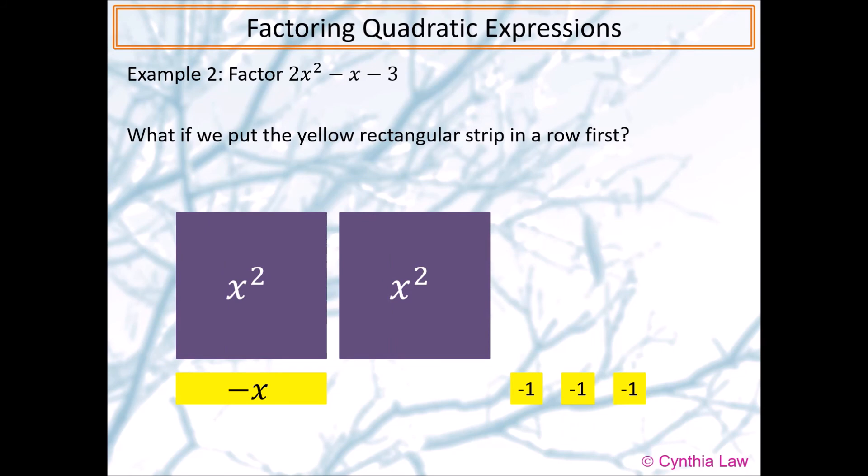Let's change how we put the yellow rectangular strip. What if we put it in a row first, so that the whole row is the same color? Then, we would need one more yellow rectangular strip to recreate a complete row. So, we will have to add one purple rectangular strip as well.